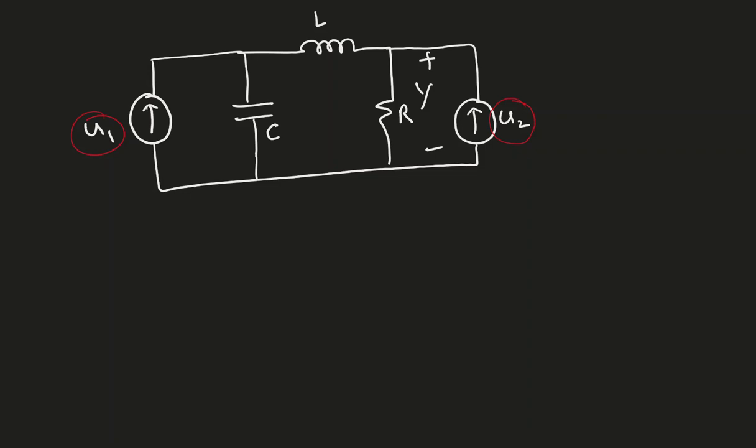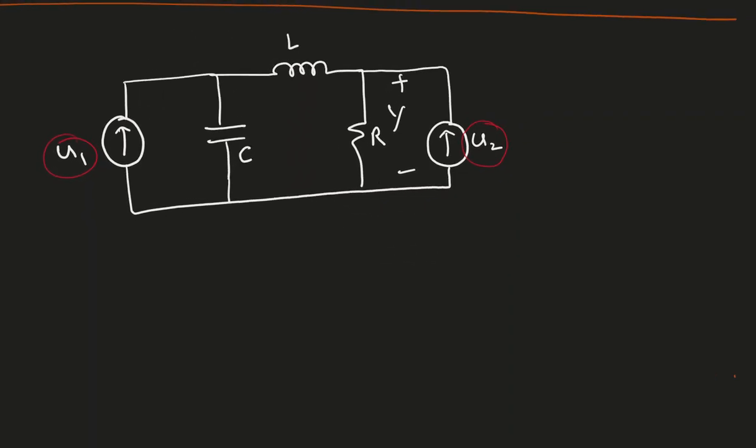Here we have two energy storage elements, so we will end up having two state variables. This is one of the state variables X1, another state variable X2. X1 is the voltage across the capacitor, X2 is the current passing through the inductor. We always choose the voltage across capacitor as one state variable and current passing through the inductor as another state variable.